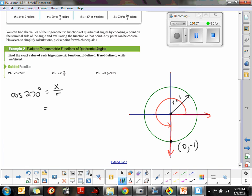Which means the cosine of 270 is 0 over r, which is 1, or the cosine of 270 is nothing more than 0. Final answer.